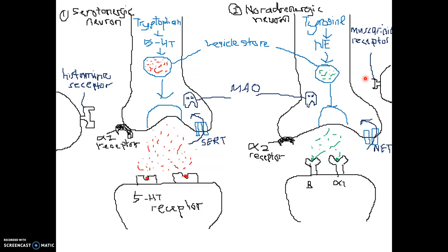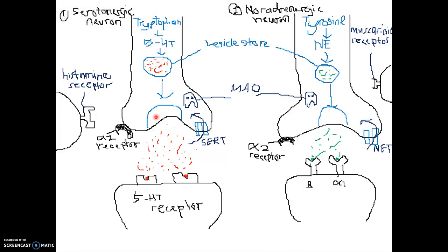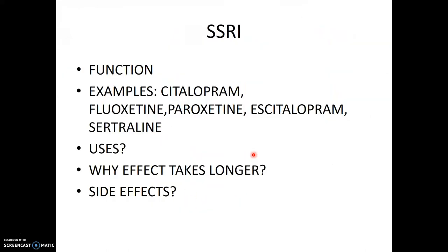The first antidepressant is the SSRI. SSRIs function by inhibiting the reuptake of serotonin — they accomplish this by blocking the serotonin reuptake transporter (SERT). By blocking the transporter, serotonin remains in the synaptic cleft for a longer period of time and can bind to the serotonin receptor on the post-synaptic membrane for longer, resulting in increased serotonin receptor activation.